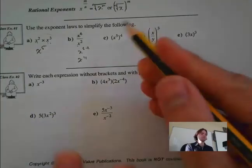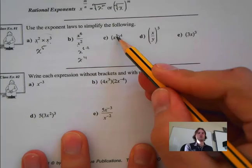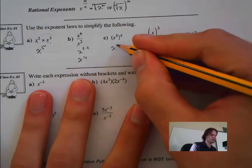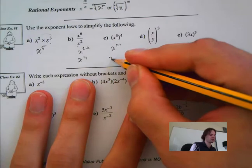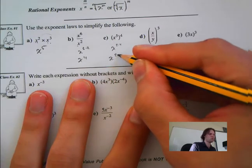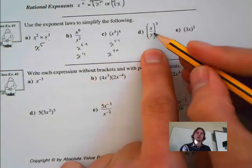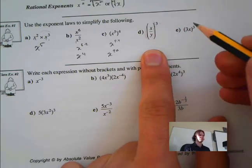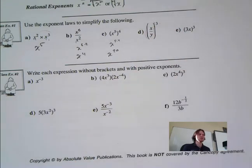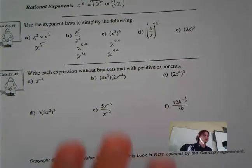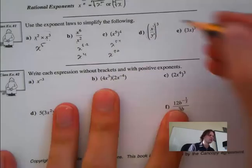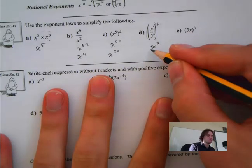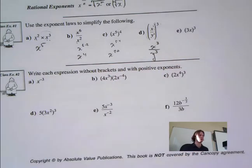Next one is power to a power — x to the 5 multiplied by 4, which is x to the 20. Then we have brackets with two things inside — it's distributable, with an imaginary exponent of 1 on each, giving x to the 3 times y to the 3.